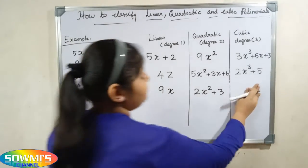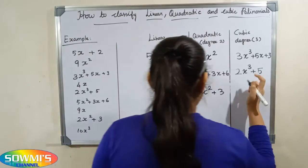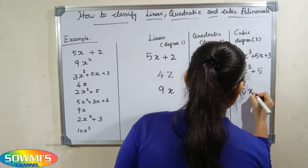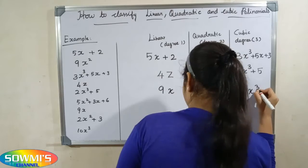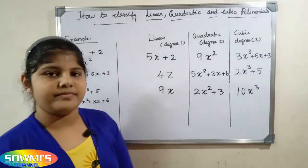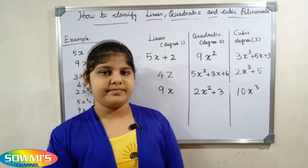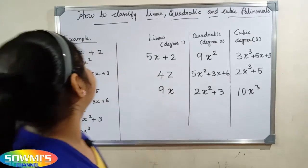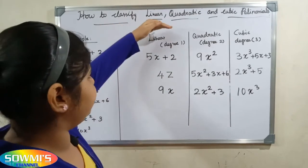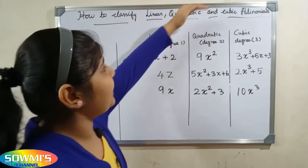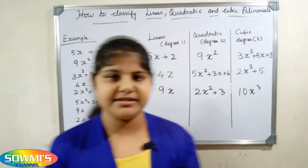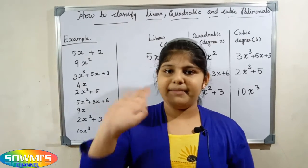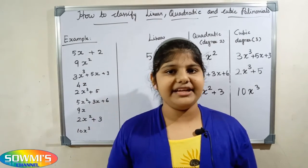10x cubed — here the degree is 3, so this is a cubic polynomial. Hope you friends all understood how to classify linear, quadratic, and cubic polynomials. Keep watching Sommish channel. Bye friends, thank you.